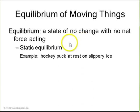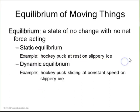An object that is perfectly stationary has no net force on it, and that's called static equilibrium, like a hockey puck at rest on slippery ice. If the hockey puck is sliding at a constant speed in a straight line, this is also equilibrium, because the net force must be zero. This is called dynamic equilibrium, meaning it's moving but not accelerating.